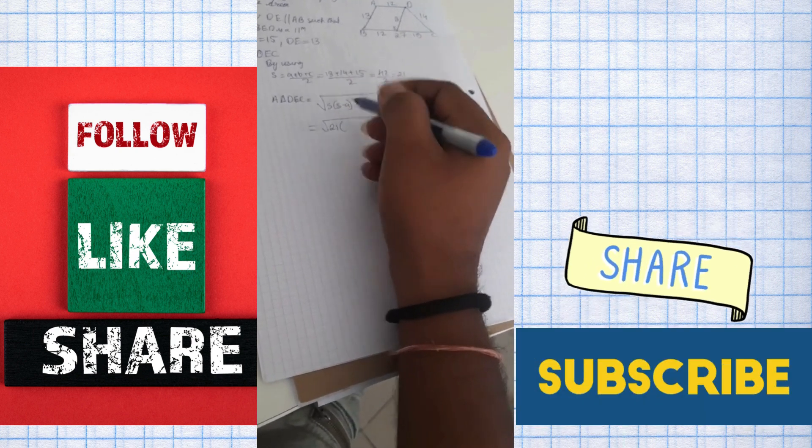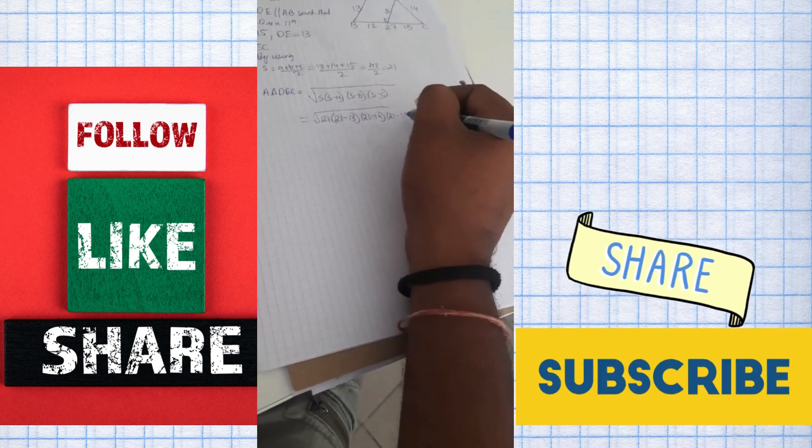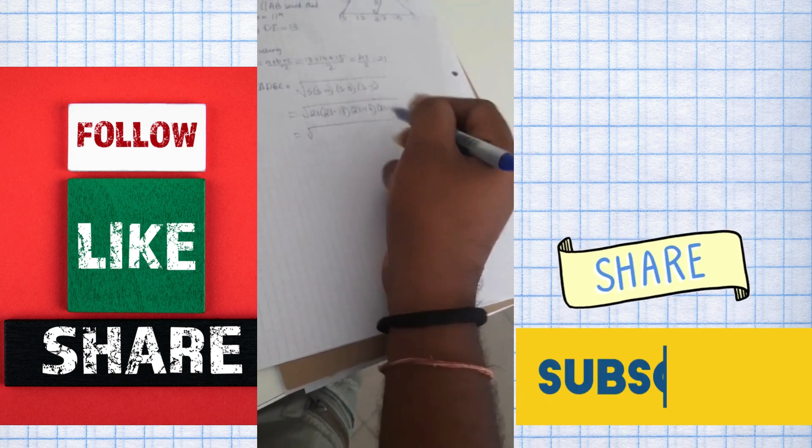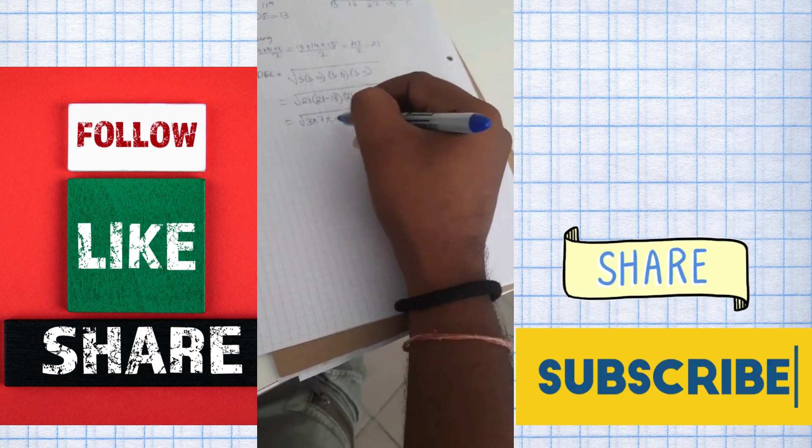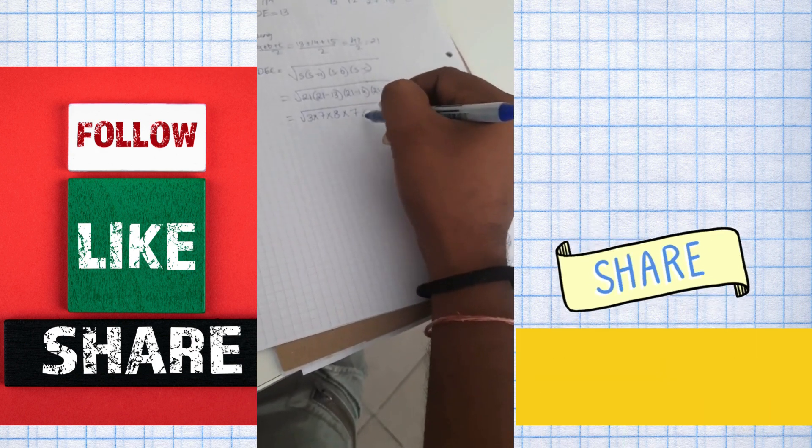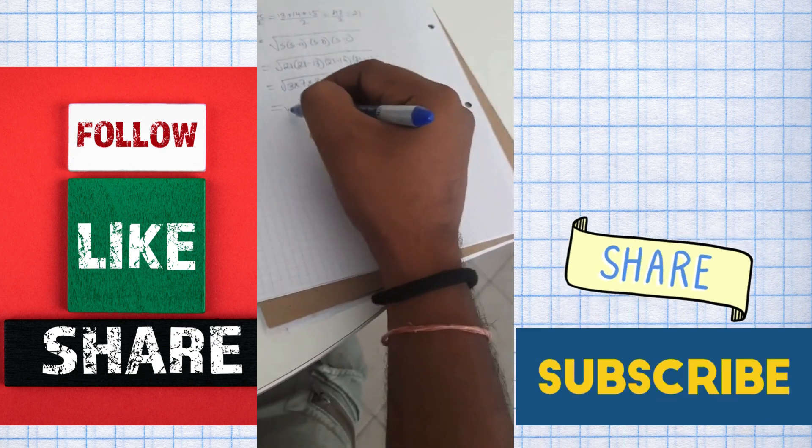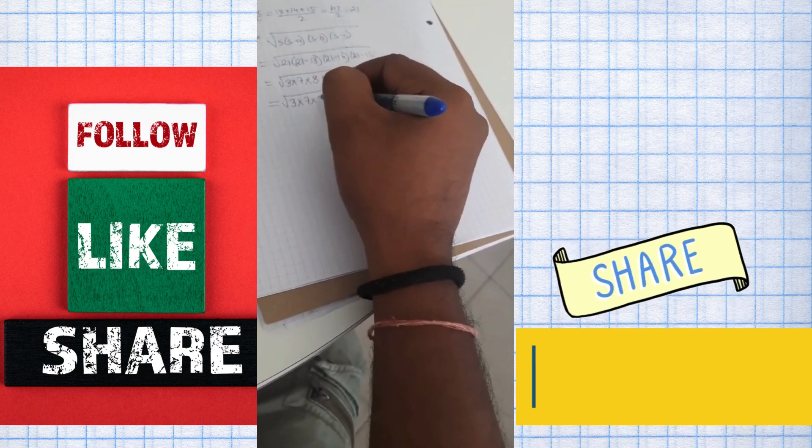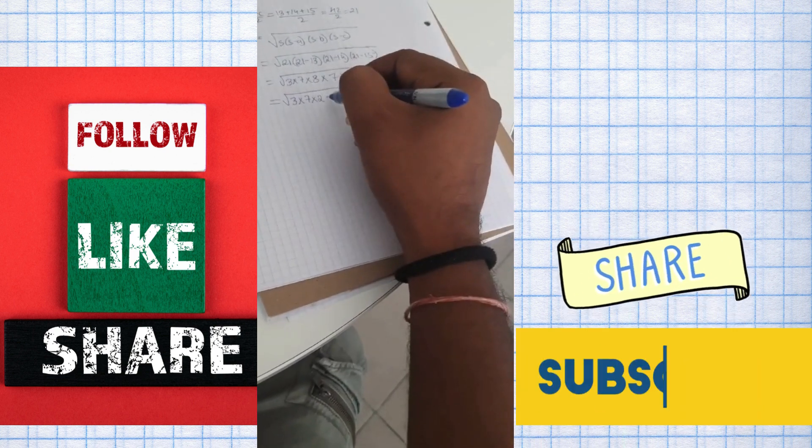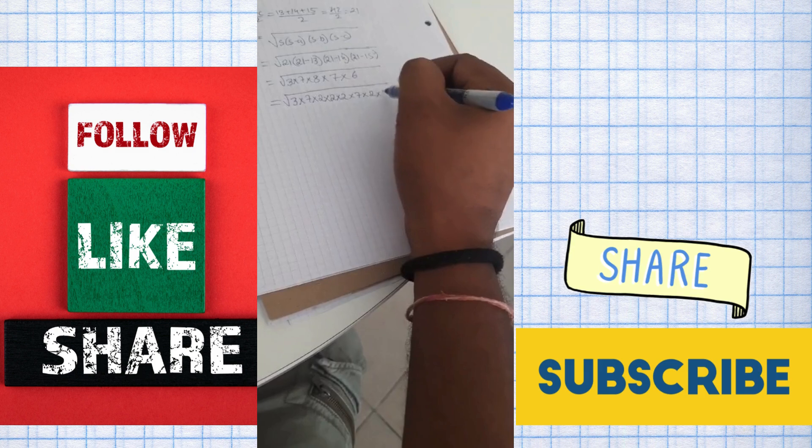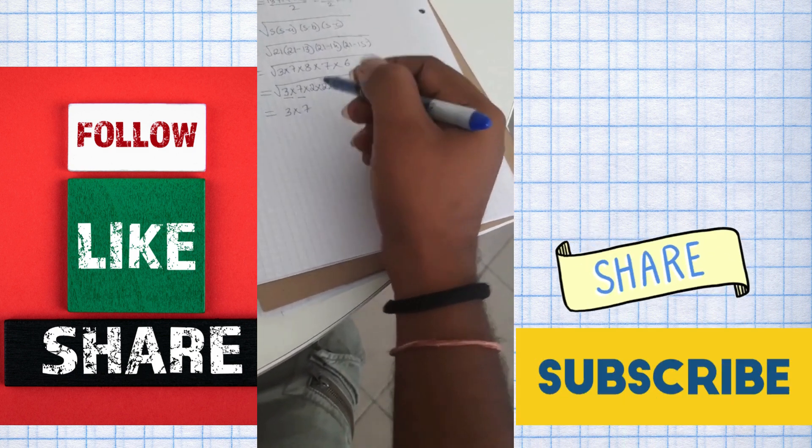Now we have 21, 21 minus 14, 21 minus 14, and 21 minus 15 which is easy. You can write 21 as 3 into 7, 21 minus 13 is 8, 21 minus 14 is 7, 21 minus 15 is 6. So we can split it out into simple terms.